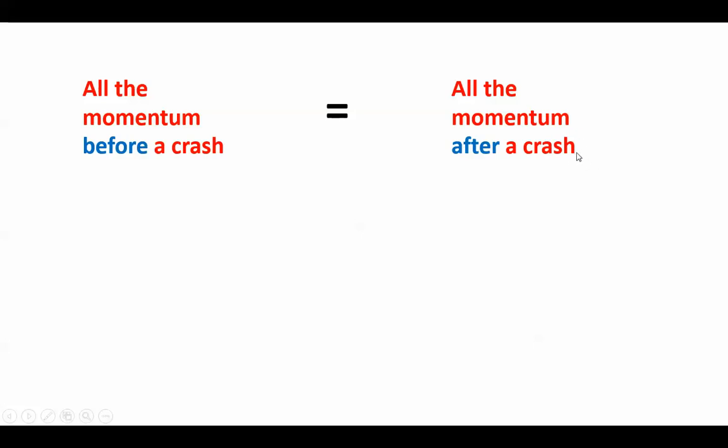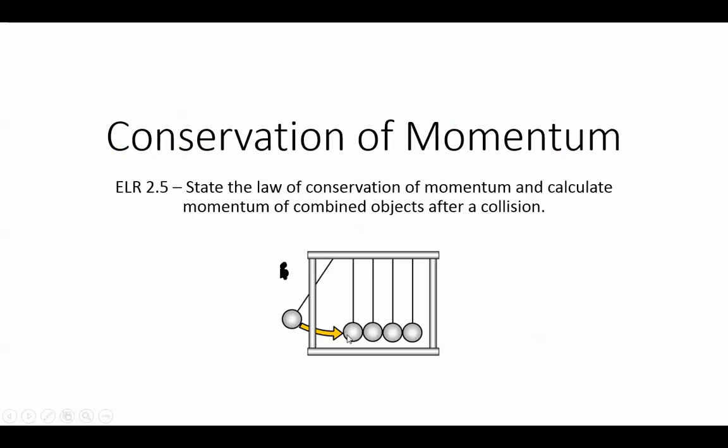And that might seem a little bit crazy, but if you think about it with the Newton's cradle experiment that we saw yesterday, if you lifted up one marble and then let it slam into the rest, one marble came out the other side. So when the momentum started with just one going to the right, it ended with just one going to the right. So hopefully this concept should at least feel a little bit intuitive.